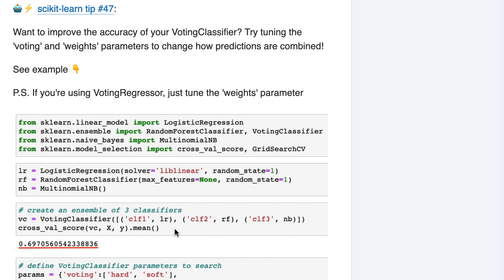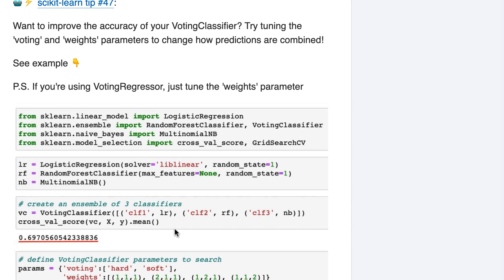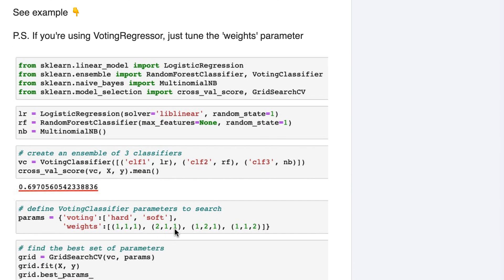We'll do this by tuning the voting and weights parameters of the voting classifier. The voting parameter controls the voting strategy, which affects how the predictions of the three classifiers are combined. The options are hard voting, in which the classifiers simply take a majority vote, and soft voting, in which their predicted probabilities are averaged.